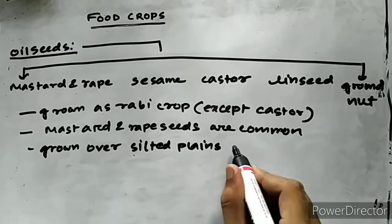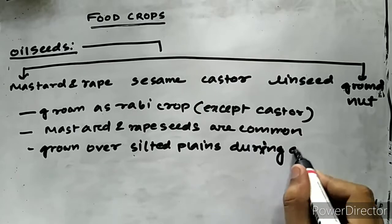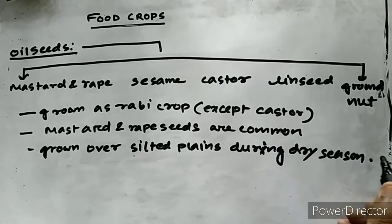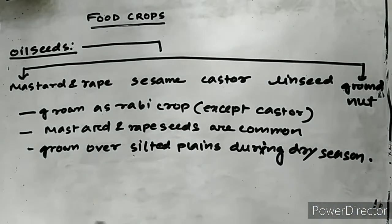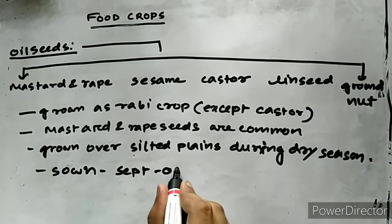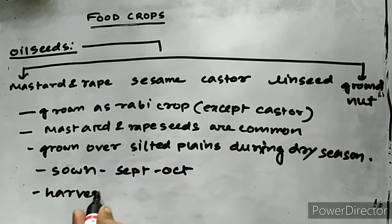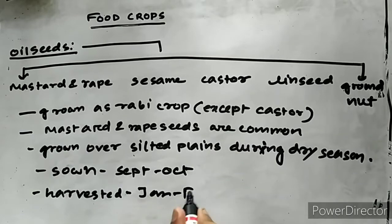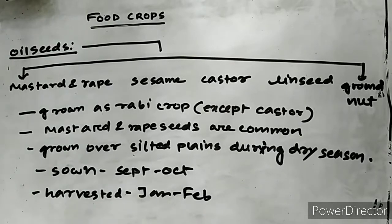Mustard and rapeseed are the common oilseeds grown in the region with total production of 1,41,000 tons in 2000-2001 over 3,22,000 hectares of land. These oilseeds are sown in September to October and harvested in January to February.